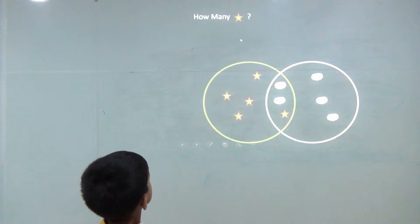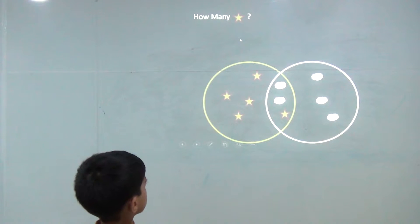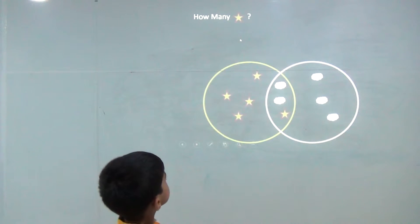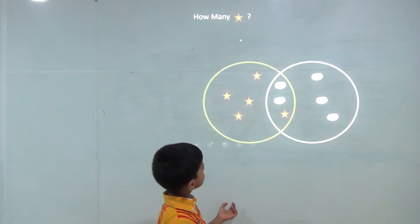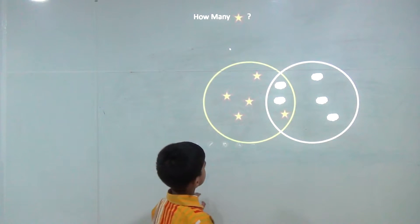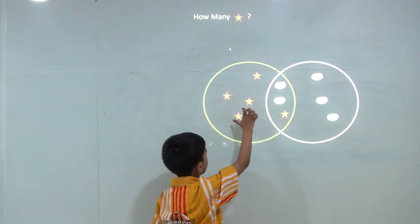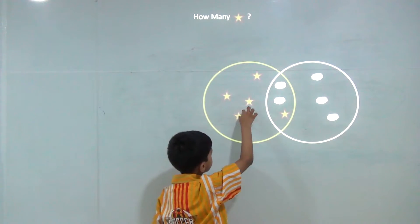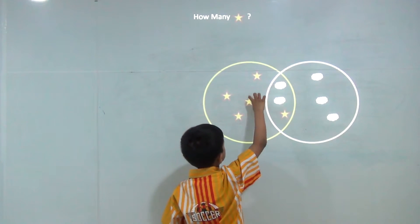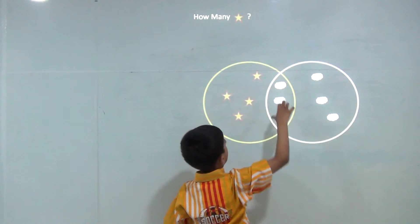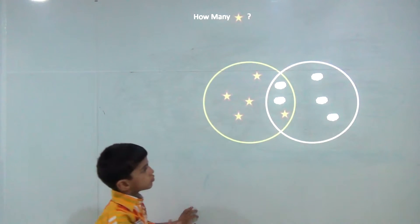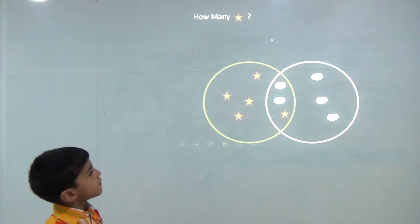How many stars are there? Let's count — one, two, three, four, and five. So the answer would be five.